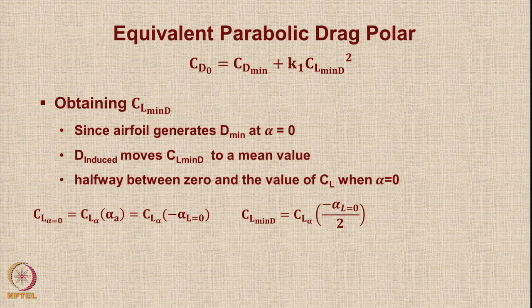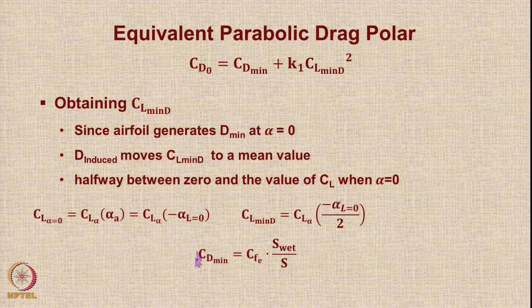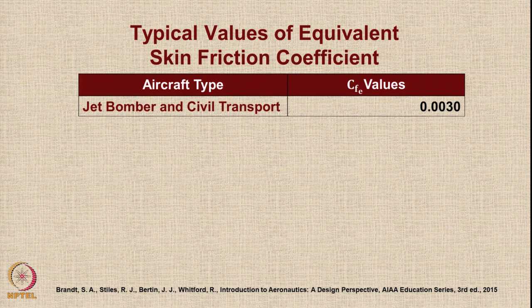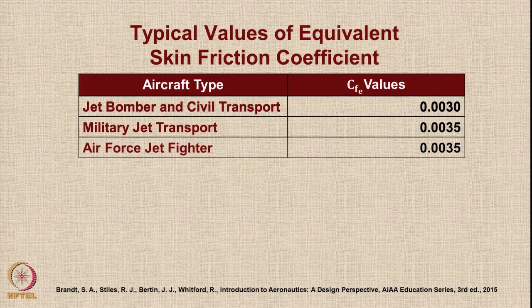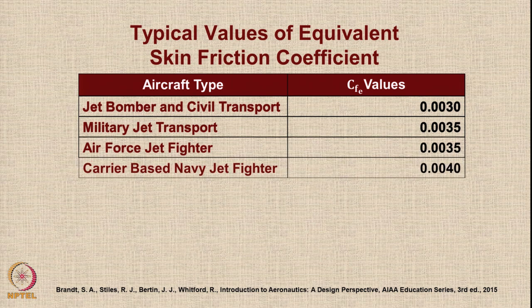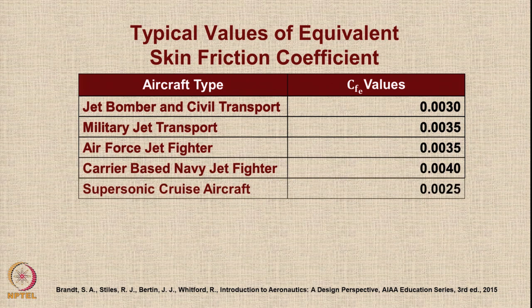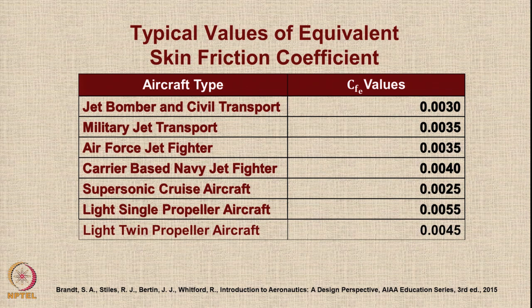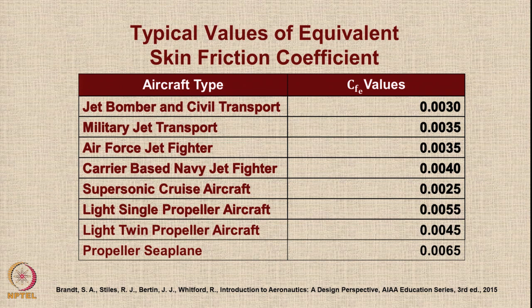CDmin can be obtained as CFe · Swet/S. Typical values of the equivalent skin friction coefficient CFe are: jet bomber and civil transport 0.0030, military jet transport 0.0035, fighter jet 0.0035, carrier-based Navy jet fighter slightly higher, supersonic cruise aircraft lower, single-seat propeller aircraft much higher, light twin propeller aircraft a bit lower, and propeller seaplane the highest value. There is also a jet seaplane category.